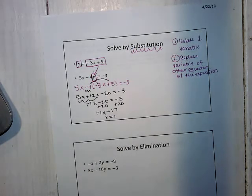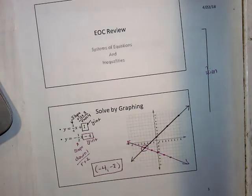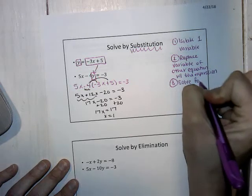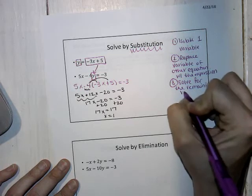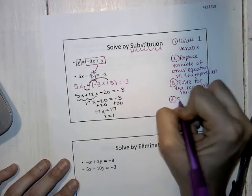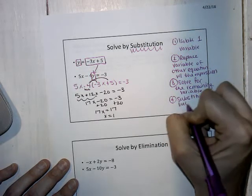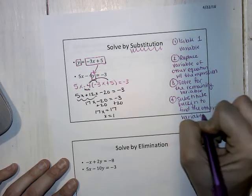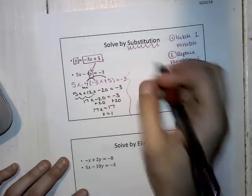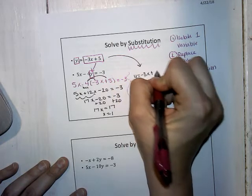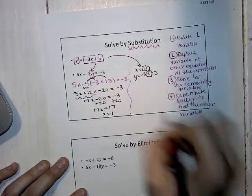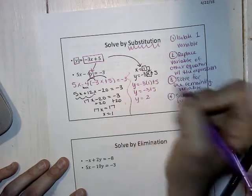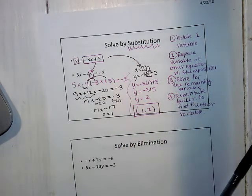Now you'll notice because we did this substitution, we no longer have two variables. That's the reason why we use substitution — so we don't have multiple variables in the problem. So we combine our like terms and solve for our variable. We get 17x equals 17, so x equals 1. But remember, we are looking for where it's intersecting on a graph, which has an x and a y. So we will then substitute back in to find the other variable. I substitute x equals 1 into y equals negative 3x plus 5, so y equals negative 3 times 1 plus 5, which gives y equals 2. You always write your answer as an ordered pair: the solution is (1, 2).